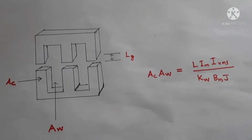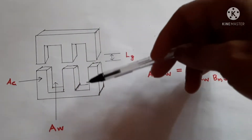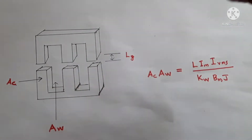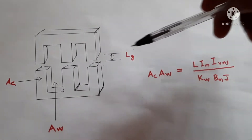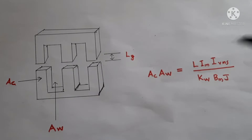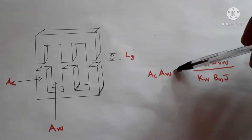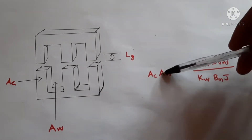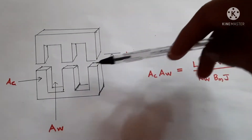Today we are going to explain how we can select an inductor core using the area product method. We are going to analyze it very simply without any complex math. This is the equation for the area product method under which we can select a core.